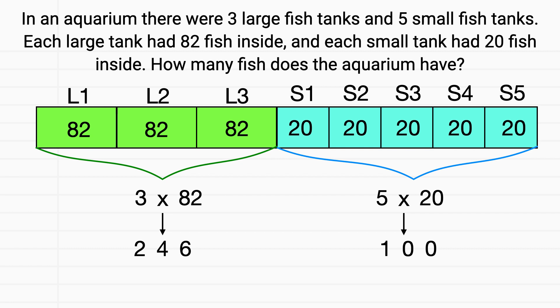Now what do we need to do to solve this problem? To find the total, we need to add 246 plus 100. When you do that, you get that there are a total of 346 fish in this aquarium.